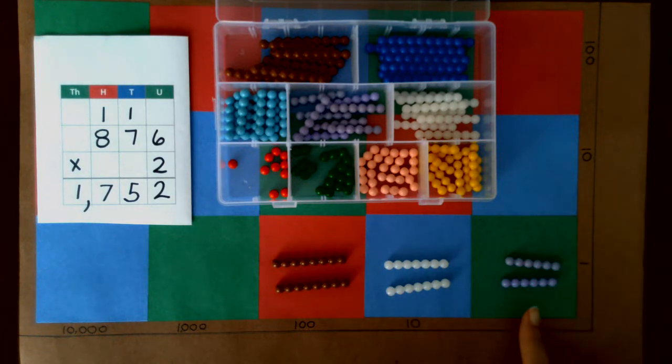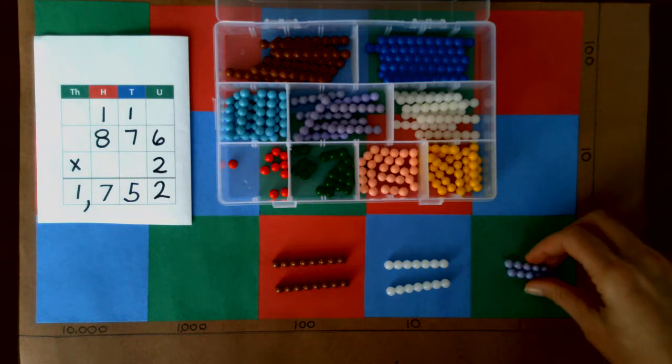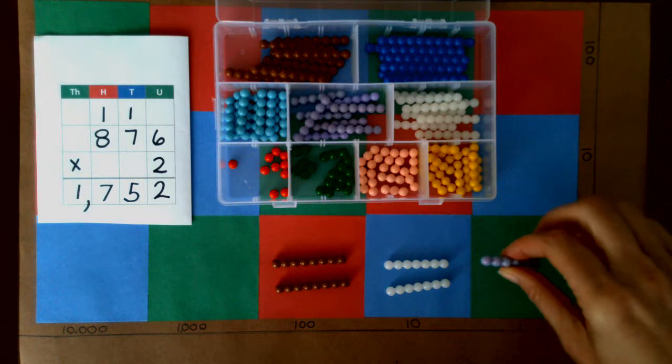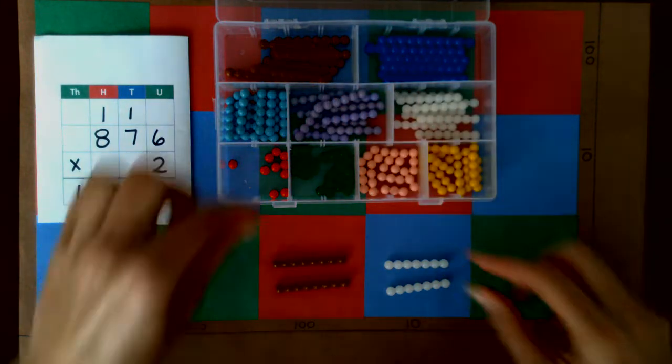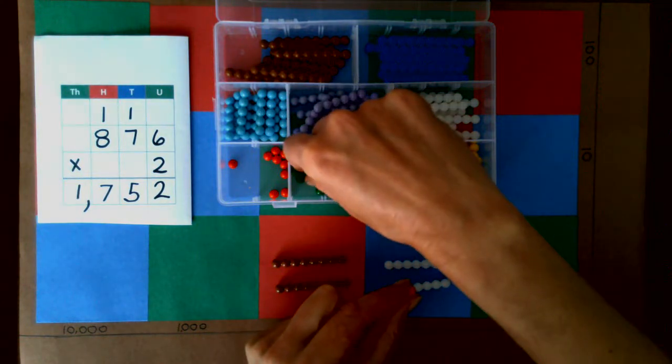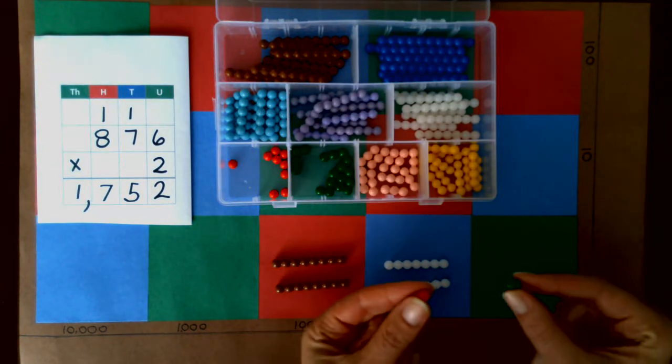Now the next step is to put everything together starting with the ones place. We have six and six, so six plus six makes twelve, so we're going to exchange that. We're going to take a one and a two.